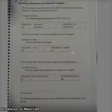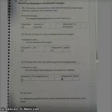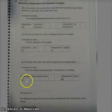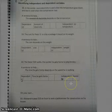The faster Will walks, the quicker he gets home to play hockey. The sentence to help: the time he gets home depends on the speed he is walking. So you've got time as the Y and speed as the X.